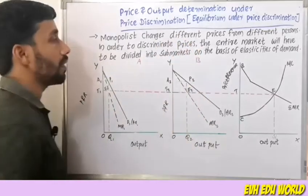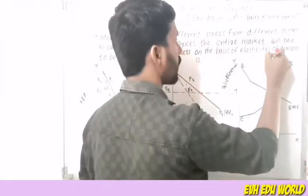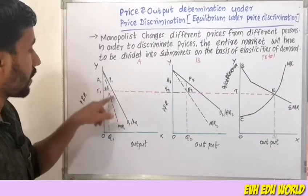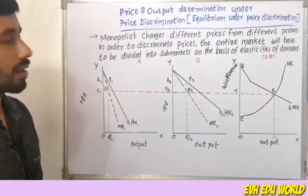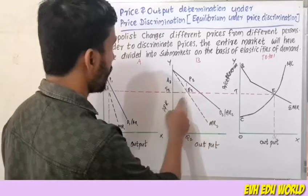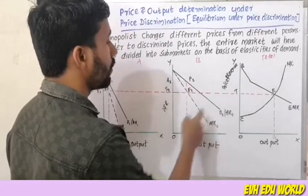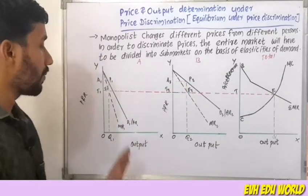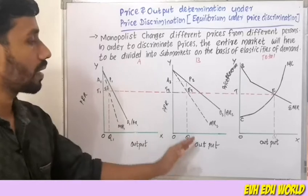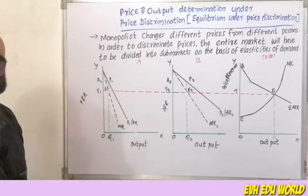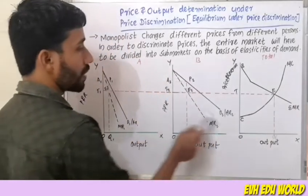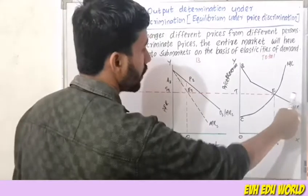If you look at market A and B, the market is divided. This is the total market. The marginal revenue curve is MR1 plus MR2 — it is a horizontal additive curve, also called Sigma MR. Now we have the MC curve.